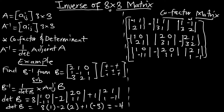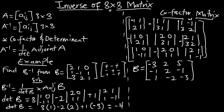The cofactor matrix of B is now going to be this matrix. Finding the determinants, you are going to get the matrix as: -3, 2, 5, then -1, 2, -1. We are also going to get 1, -2, -3 for the determinants of these 2x2 matrices.